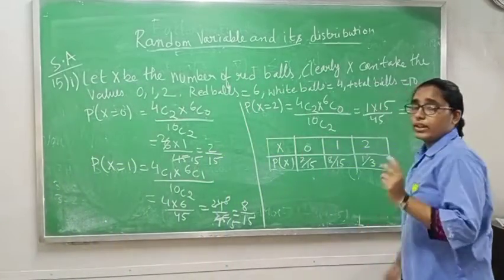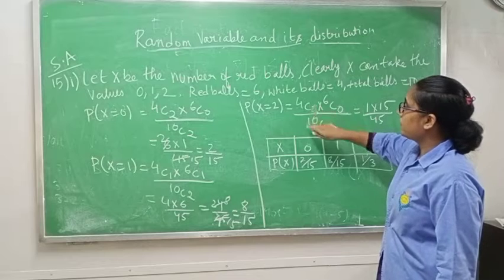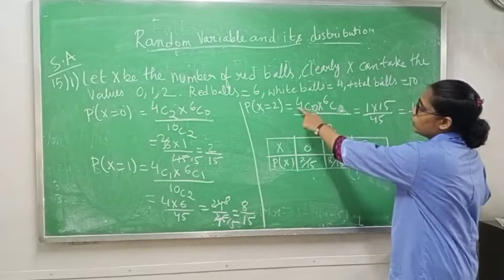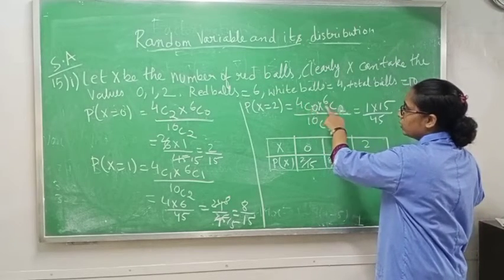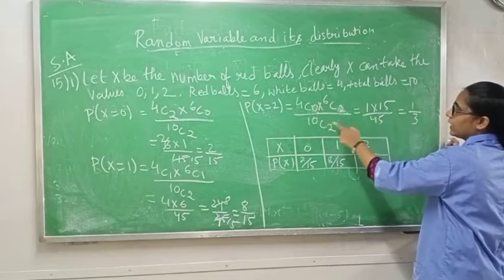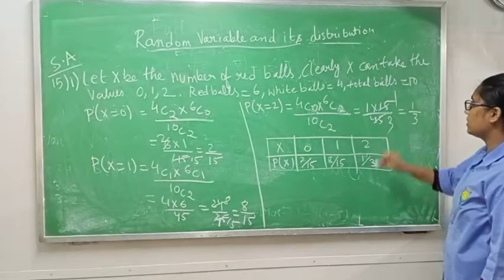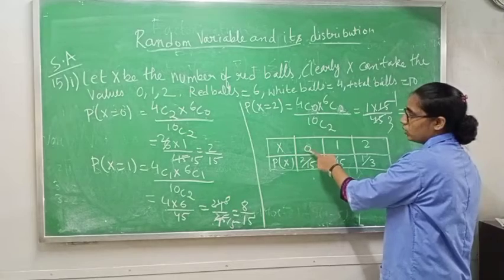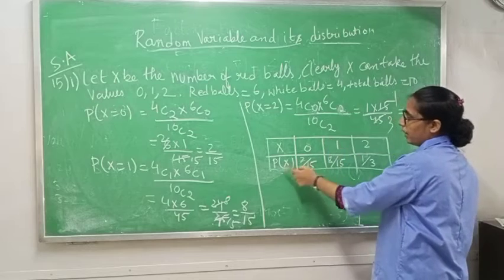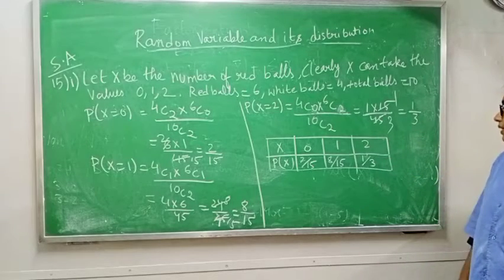P(X=2): both cards are red, so 4C0 into 6C2 divided by 10C2. 6C2 gives 15, 4C0 gives 1, and 10C2 is 45. So P(X=2) = 15/45 = 1/3. Summary: P(X=0)=2/15, P(X=1)=8/15, P(X=2)=1/3.